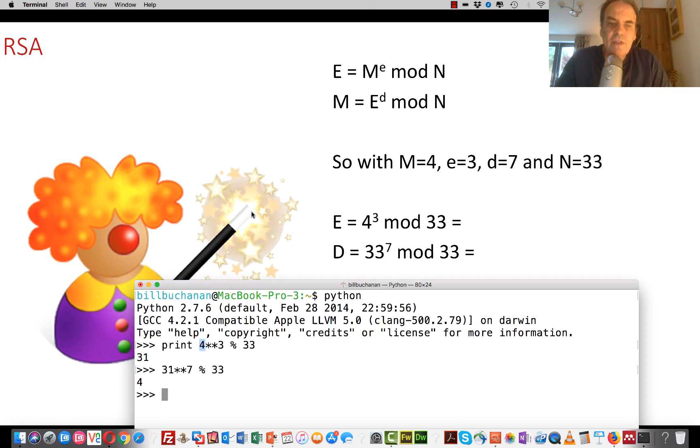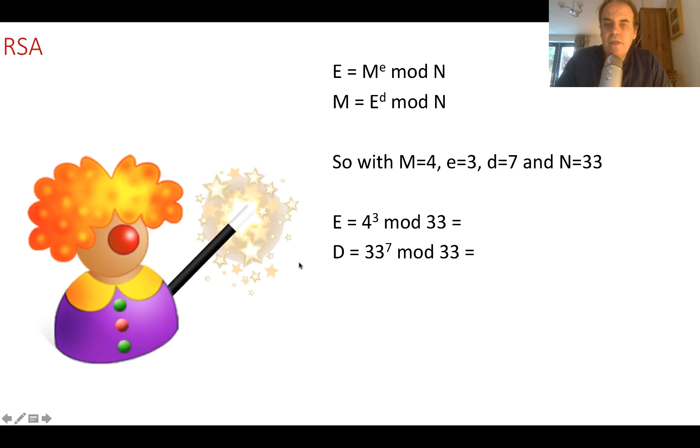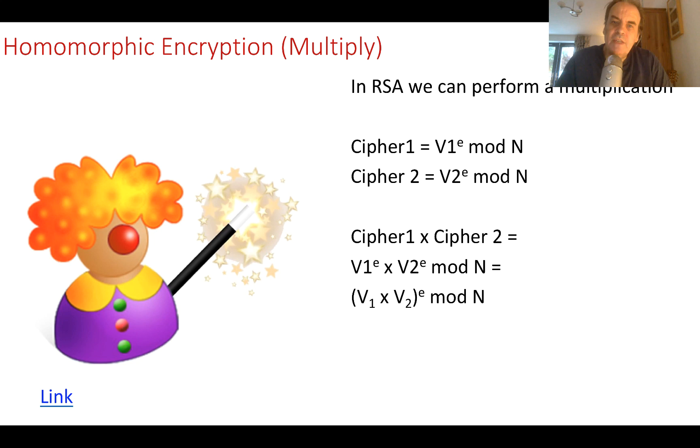Okay, so it works out. So that's the RSA method. So how come we can do partially homomorphic encryption with RSA?